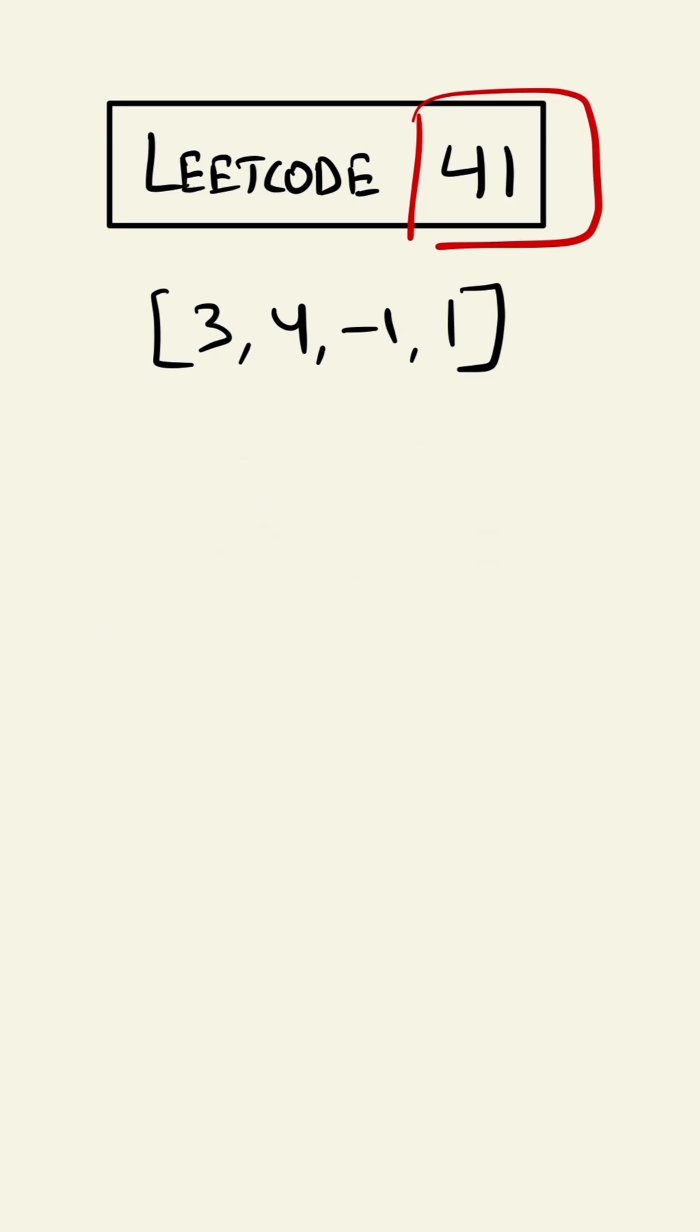Suppose this is our given list. We have to arrange the numbers according to their value. So first we encounter this 3. We have to put this at the right index. The right index would be 2.